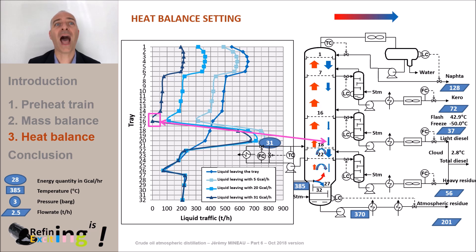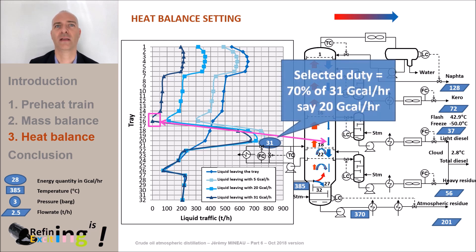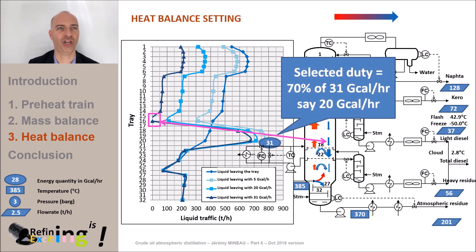But then, how to choose the optimal amount of heat to be extracted? There are several ways to do it. For our example, we will arbitrarily choose to remove 70% of the maximum recoverable calories before drying out the trays. This is simply to keep a margin. 70% of 31 giga calories per hour is 20 giga calories per hour.